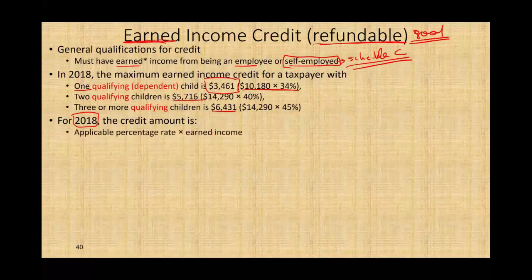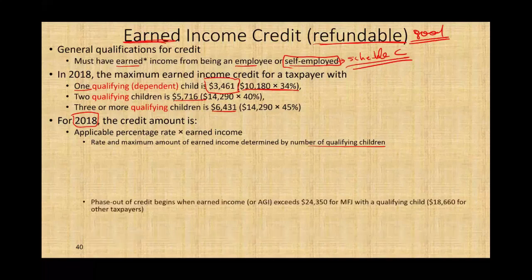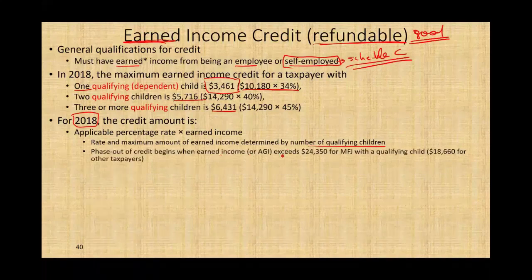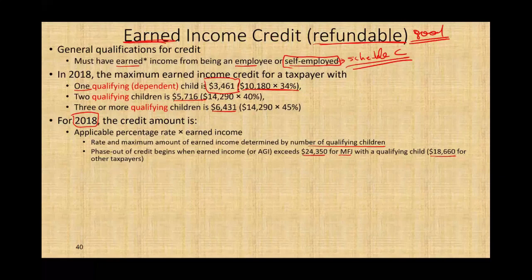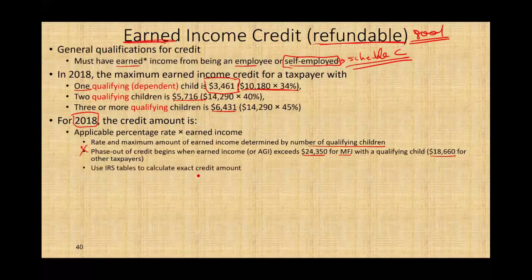We'll take the applicable percentage times the earned income. The rate and maximum amount of earned income is determined by the number of qualifying children — the more qualifying children, the more you will get. Phase out begins when earned income exceeds $24,350 for married filing jointly with one qualifying child, and $18,660 for other taxpayers. You determine the amount from the IRS tables.